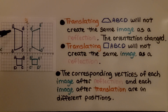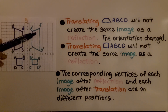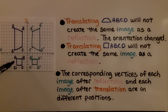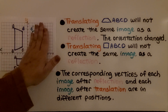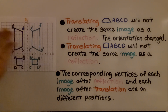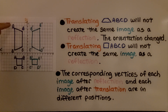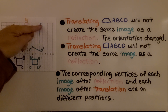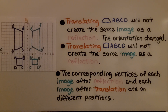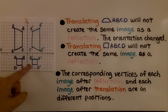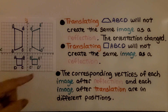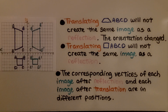Translating trapezoid ABCD will not create the same image as a reflection — the orientation changed. Similarly, translating square ABCD will not create the same image as a reflection. When we're translating, we just slide the figure across. A reflection flips the figure over; it didn't just slide. We can look at the vertices: on the pre-image A is here, but on the image A prime is over here. By looking at the vertex labels, we can tell it flipped — it's a reflection, not a translation.